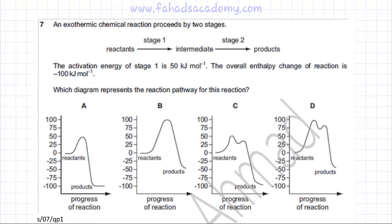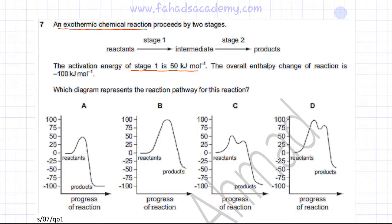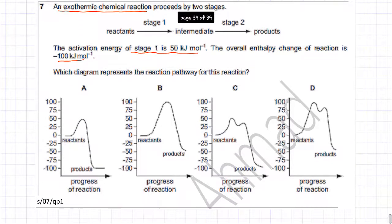This chemical energetics question deals with the energy profile diagram. The overall reaction is exothermic and proceeds by two stages. Reactants first get converted to an intermediate, and then those intermediates get converted to products. The activation energy of stage one is given as 50 kilojoules per mole, and the overall enthalpy change of the reaction is minus 100 kilojoules per mole.